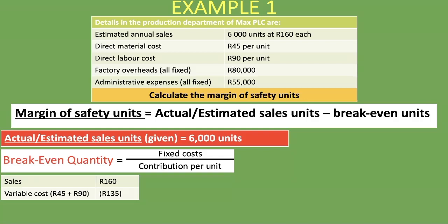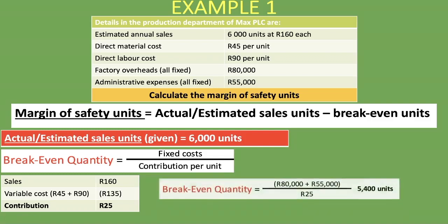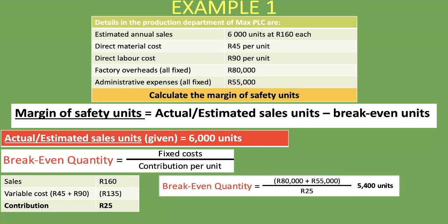Our contribution per unit is 160 rand minus 135 rand, which gives us a contribution of 25 rand. Now that we have our contribution of 25 rand, we take our fixed costs — 80,000 rand plus 55,000 rand — divided by the 25 rand contribution, and it gives us 5,400 units. That is our break-even quantity, or our break-even units.